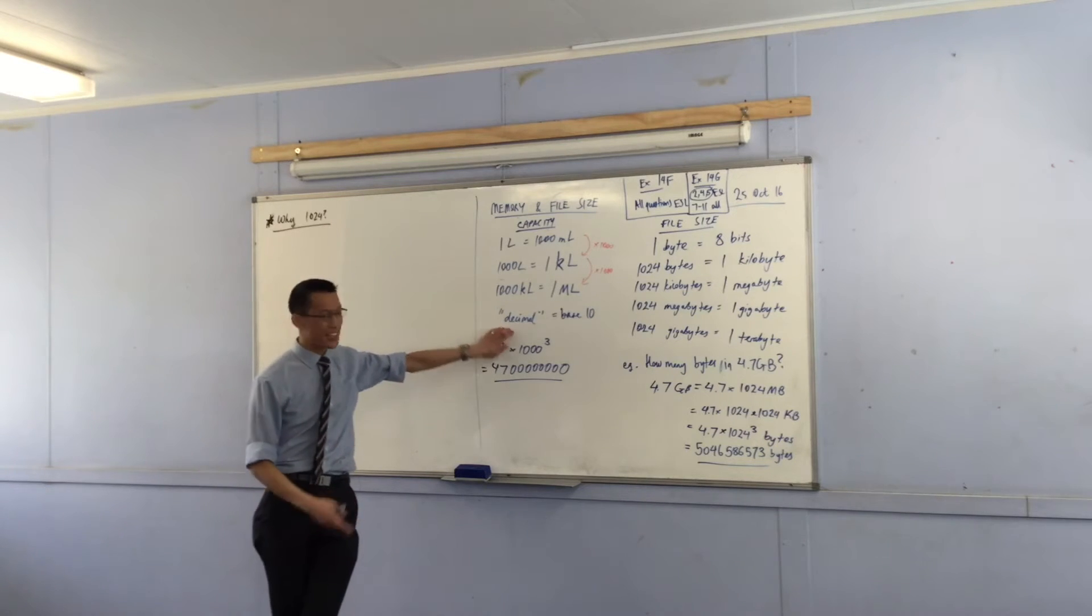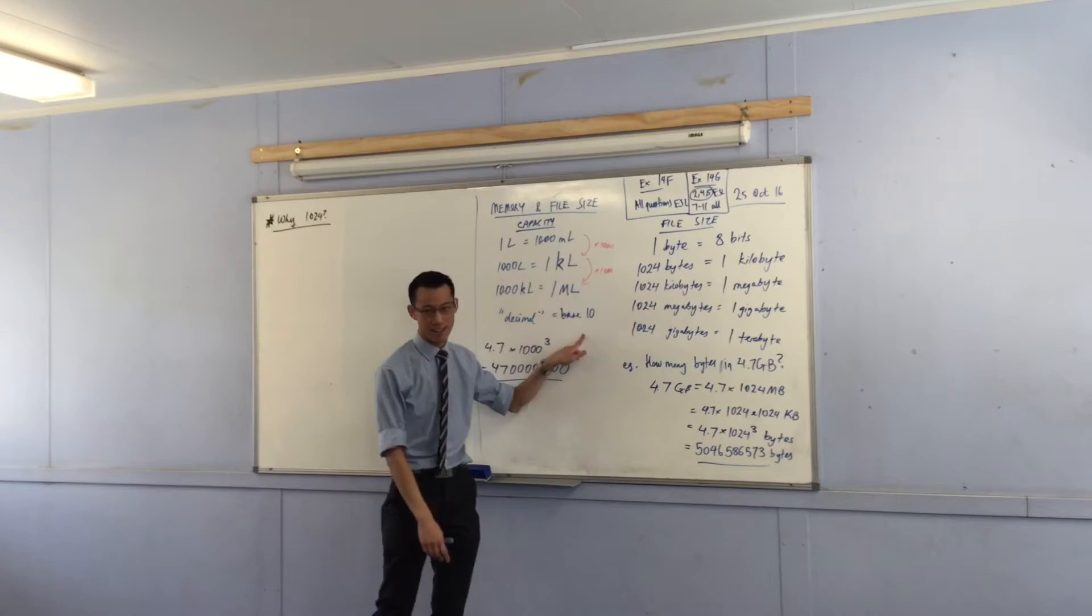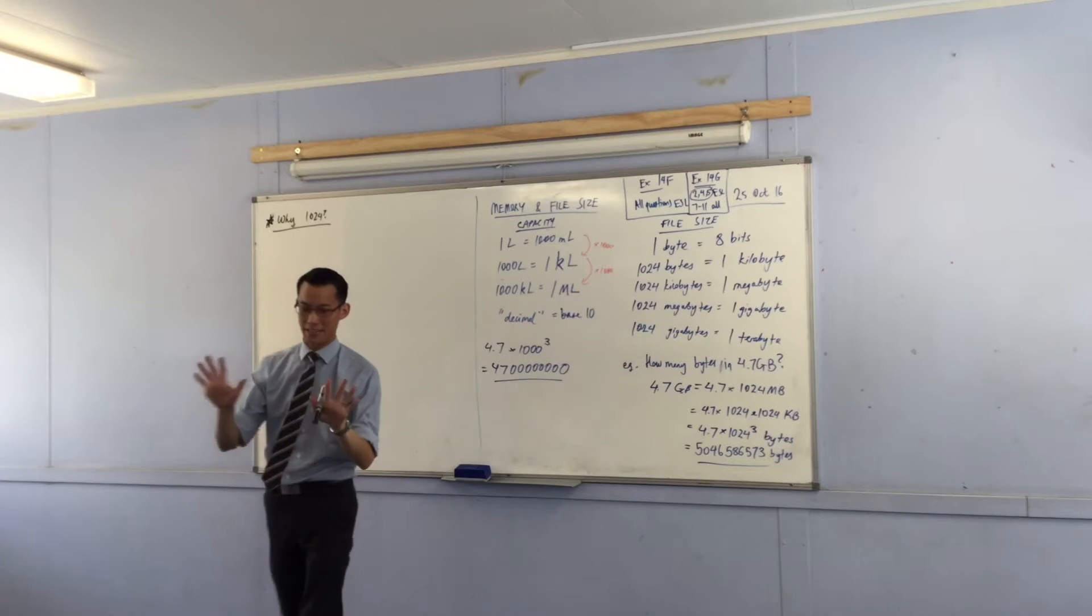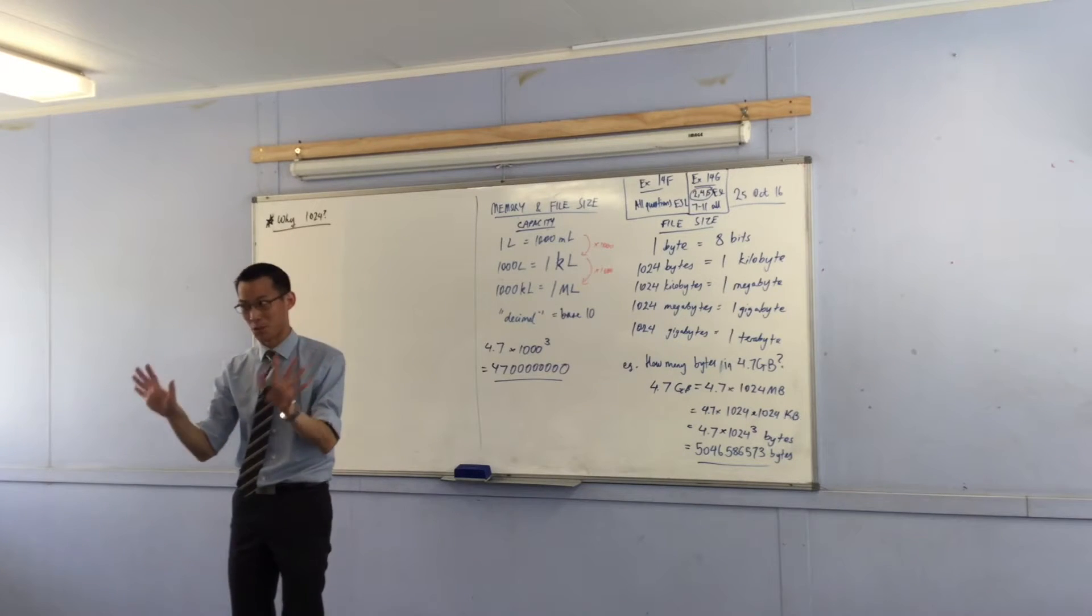We humans have a decimal system, it's base 10. Ten digits because we have ten digits - believe me, they are called digits.